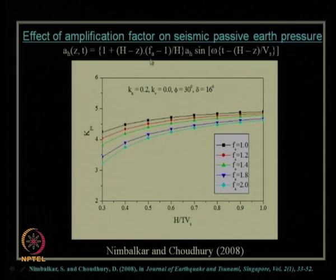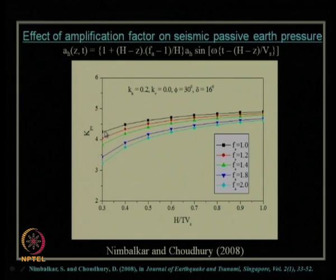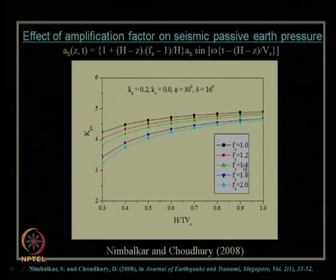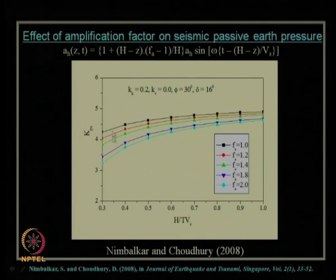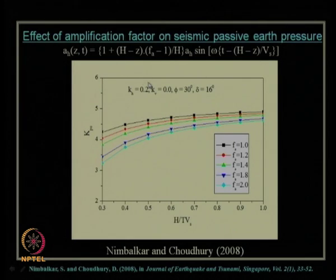Regarding soil amplification effects: when there is no amplification (F_A = 1), the variation of K_PE with H/(T·V_S) follows a certain curve. When the soil gets amplified 1.4 or 2 times during earthquake shaking, the design value of K_PE decreases further — meaning design values should be much lower than for non-amplified soil. This criticality can be captured in the pseudo-dynamic approach but not in the pseudo-static approach. A comparison shows that the pseudo-dynamic method gives lower (more conservative) K_pe values compared to Mononobe-Okabe and other pseudo-static methods.